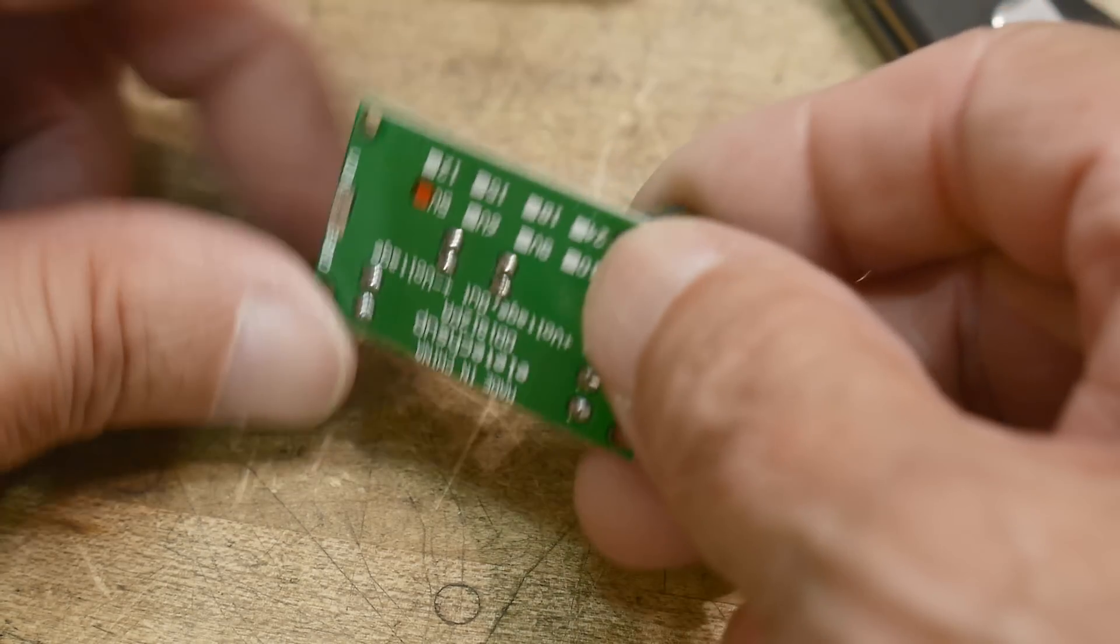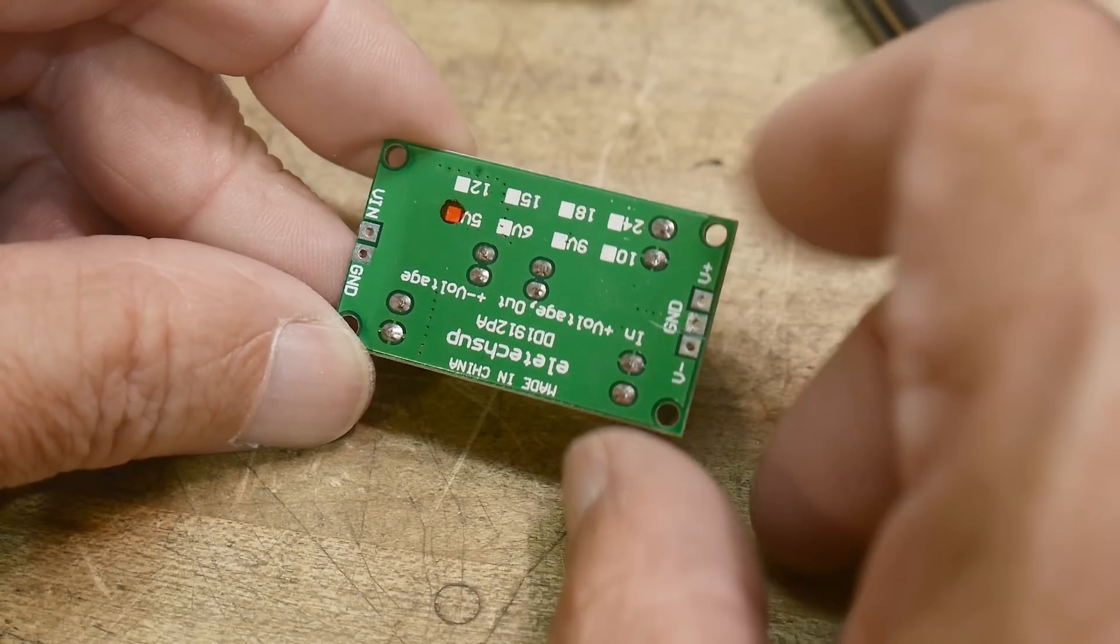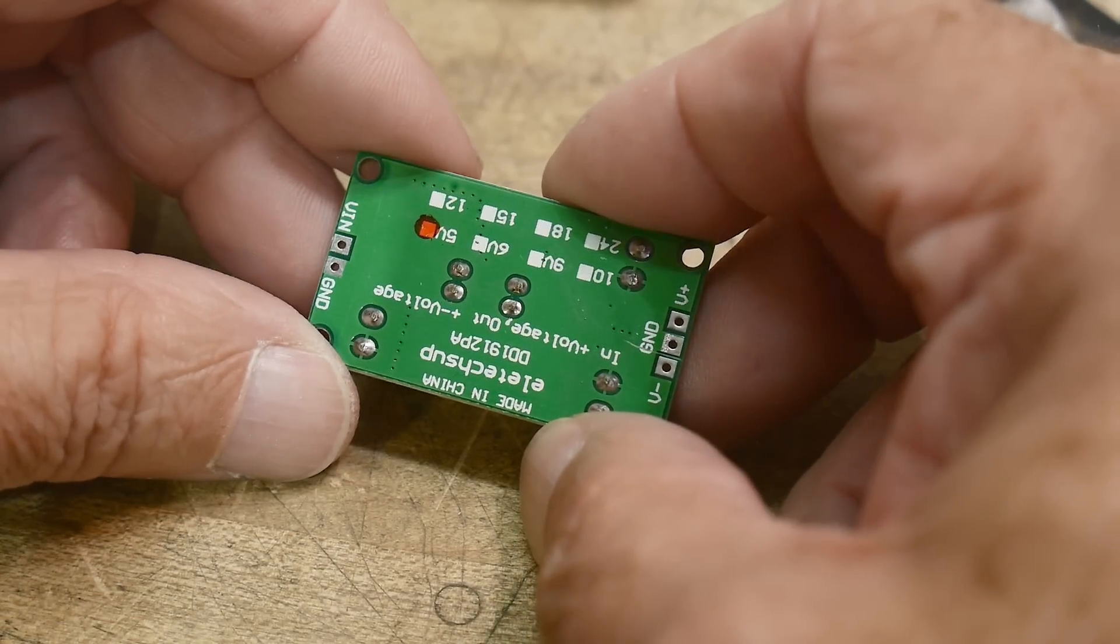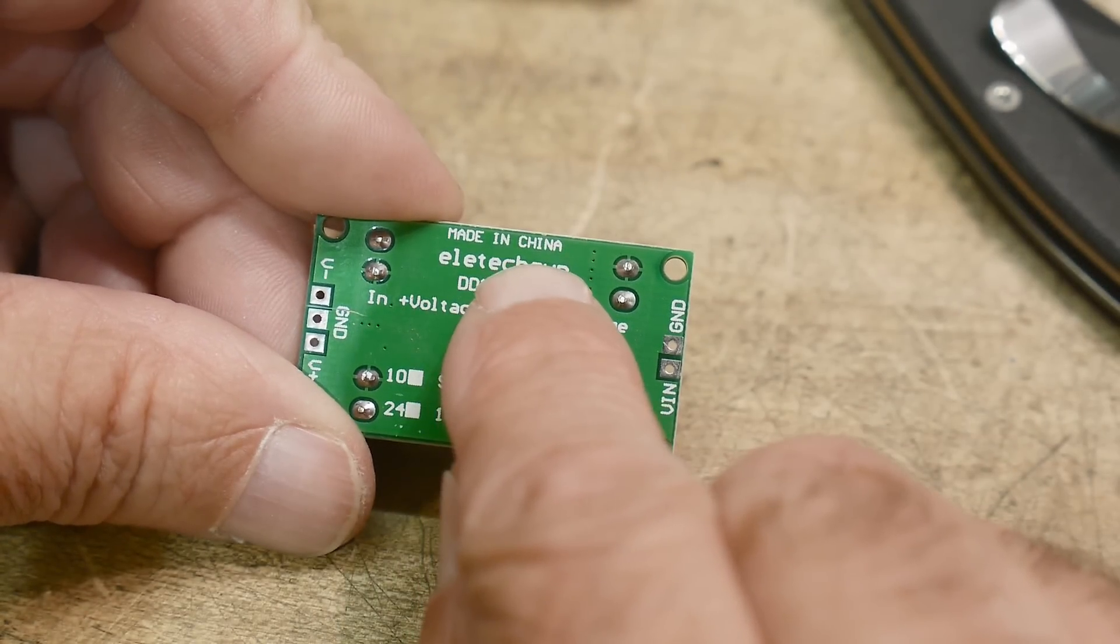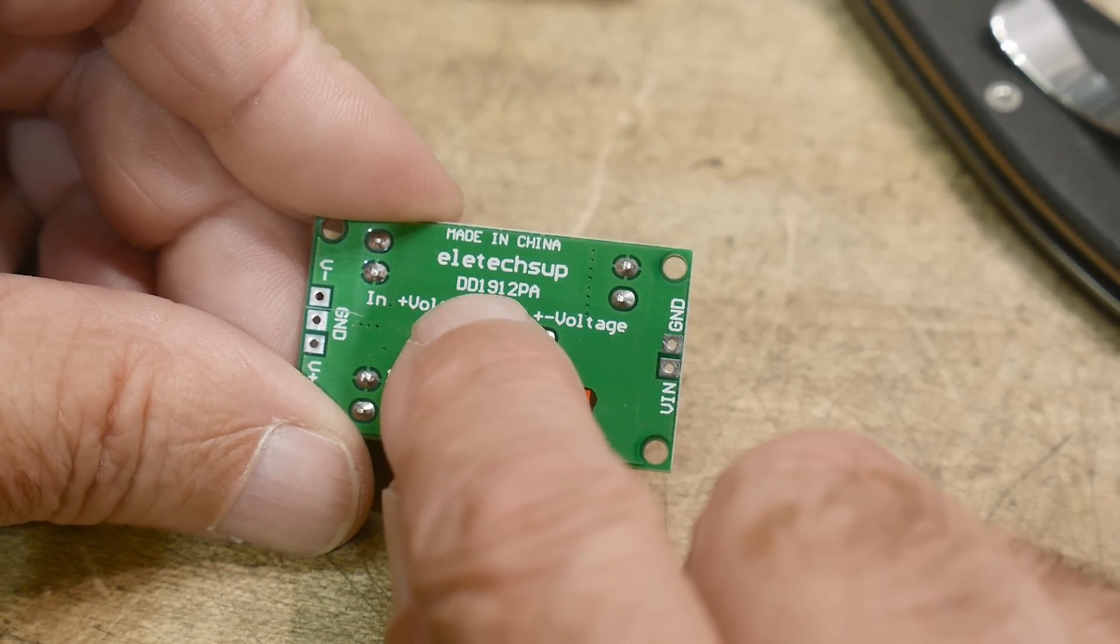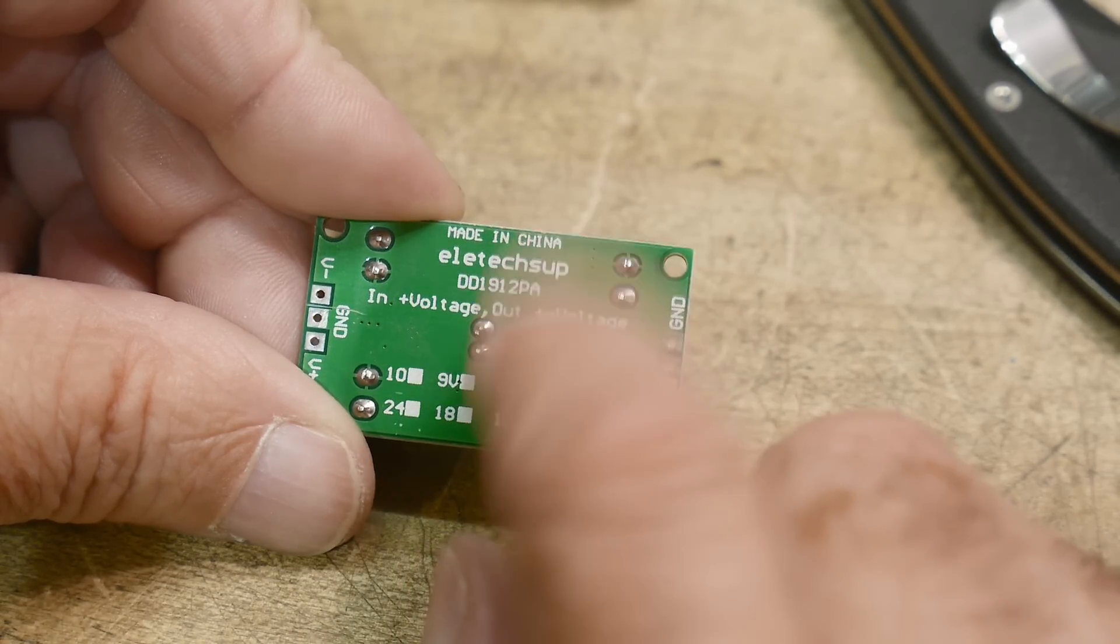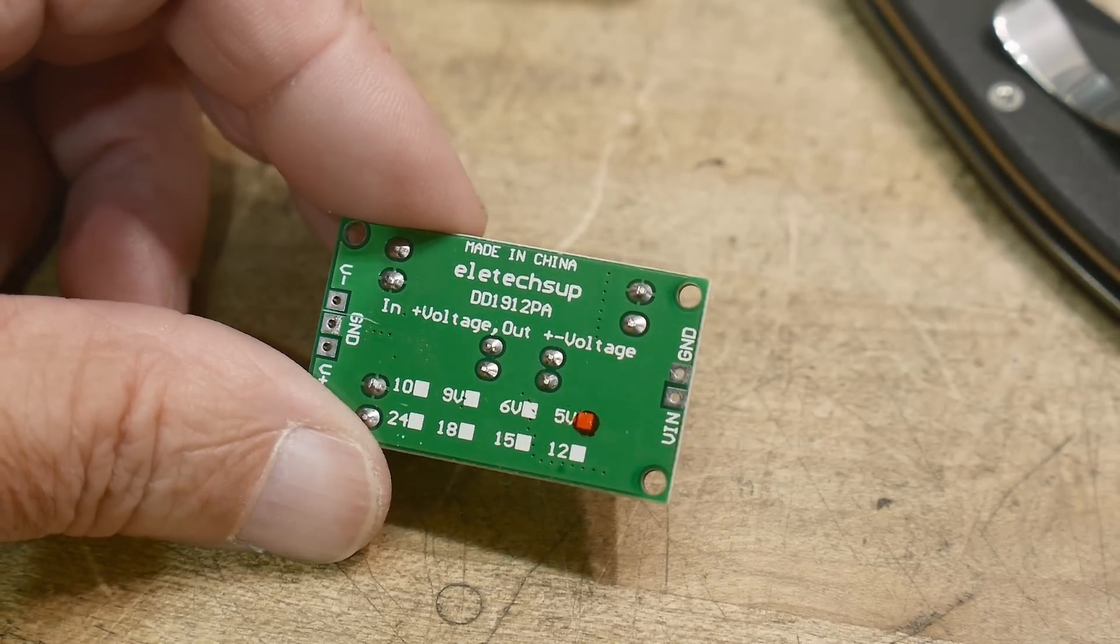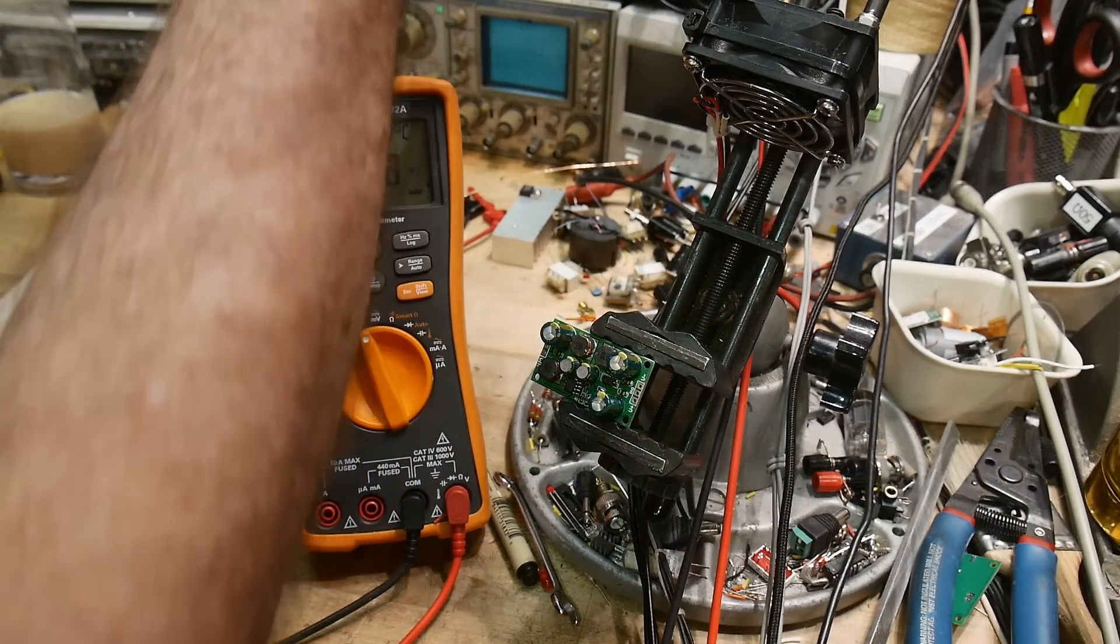When it arrived in the mail it was marked 5 volts and I thought oh no, I think they shipped me the wrong one. But this is a made in China Elatec SUPP DD1912PA. Let's hook it up and measure it and see if my fears are correct.